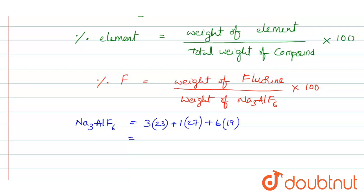We have to multiply these things. So 3 into 23 that is 69 plus 27 plus 114. Totally it is equal to 210 gram per mole.